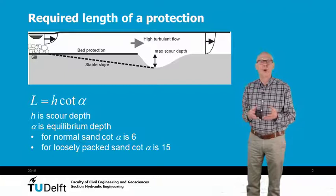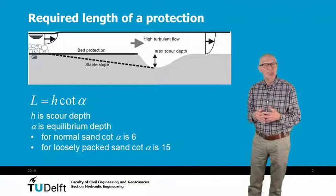For normal sand, the cotangent of the equilibrium slope is in the order of 6. For loosely packed sand, subject to liquefaction, it might be in the order of 15 to 20.